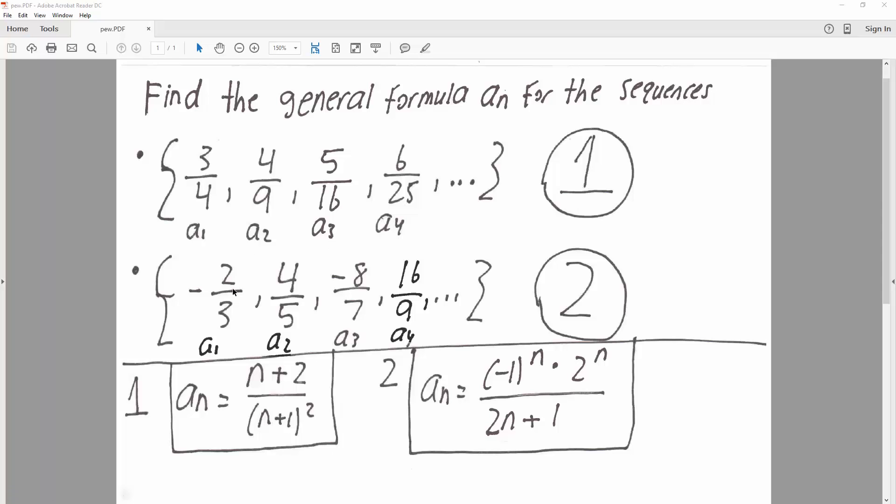Now for the second question, I'm going to do the same strategy. I'm just going to take a quick look at what we see. So one thing I see right now is that the first term is negative, second is positive, third is negative, and fourth is positive. So it alternates.